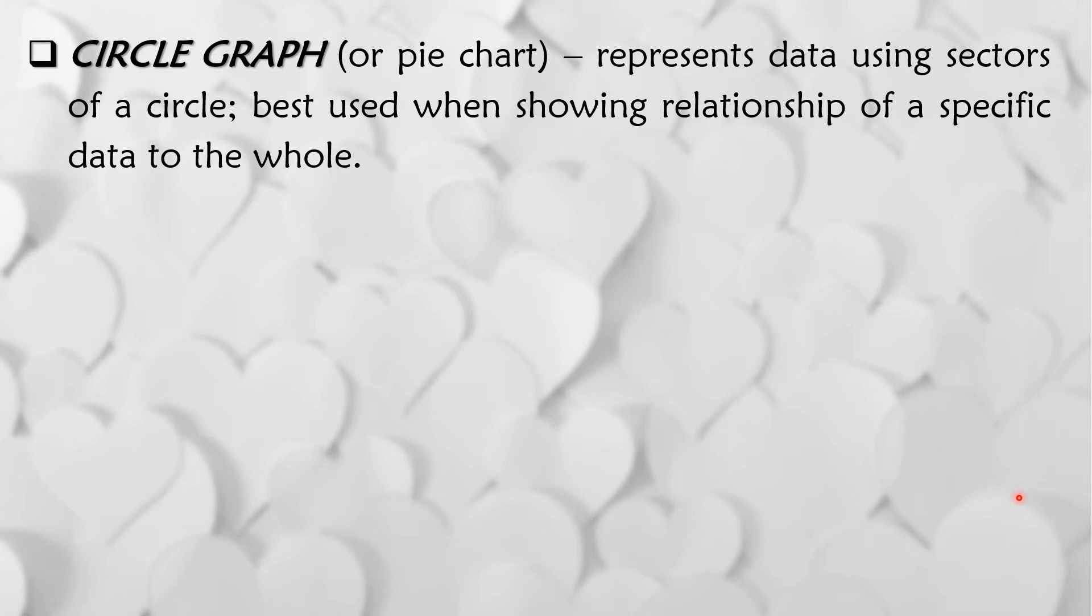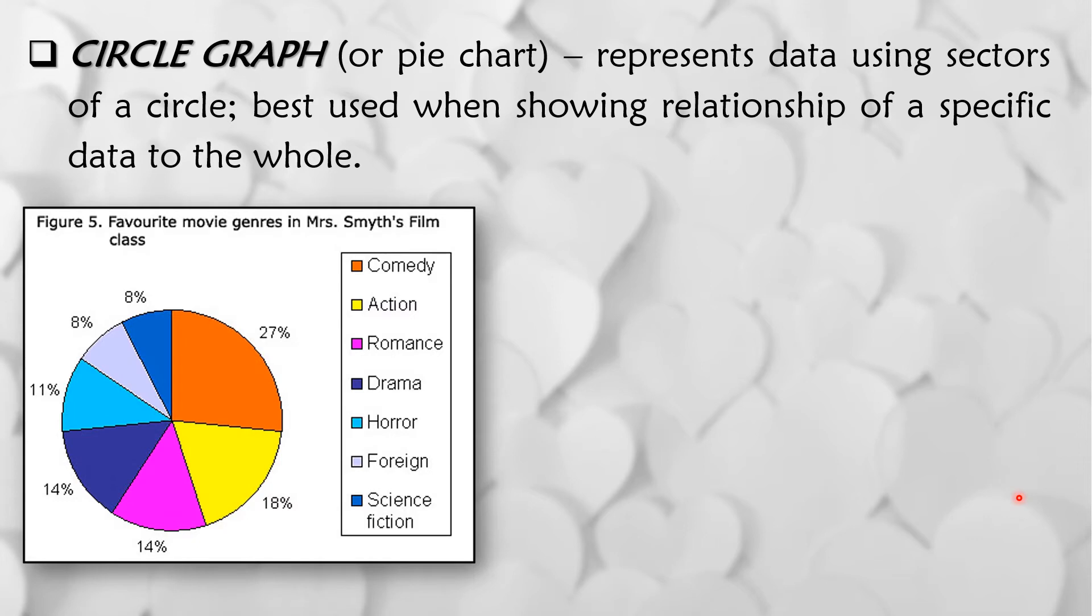Last type of graph is the circle graph or tinatawag din na pie chart. It represents data using sectors of a circle. It is best used when showing relationship of a specific data to the whole. So ginagamit ang circle graph or pie chart kapag meron tayong percentage or percent. Kung saan ang isang bilog ay katumbas ng 360 degrees, or katumbas ang percent na ito into full or 100%.